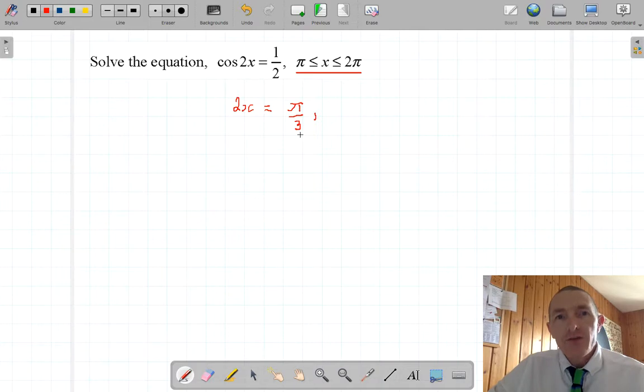And that's going to be 2pi take away this, so that gives me 5pi over 3 rather. Now, I'm just going to stop and reflect on these two answers before I go any further.